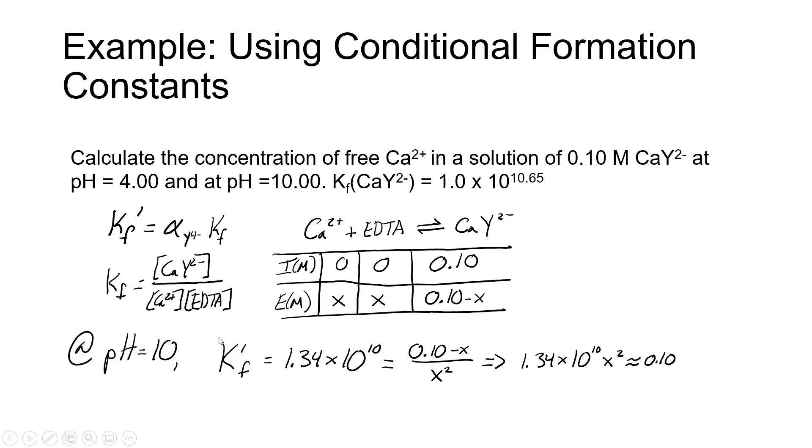Most EDTA titrations are run at pHs above 6. So generally, when you're using this equilibrium constant expression in the numerator, you can assume that that minus X term is negligible compared to 0.1. And if we make that assumption, our equilibrium constant expression becomes 1.34 times 10 to the 10th times X squared. We just multiplied both sides of the equation by X squared to get that is equal to 0.1.